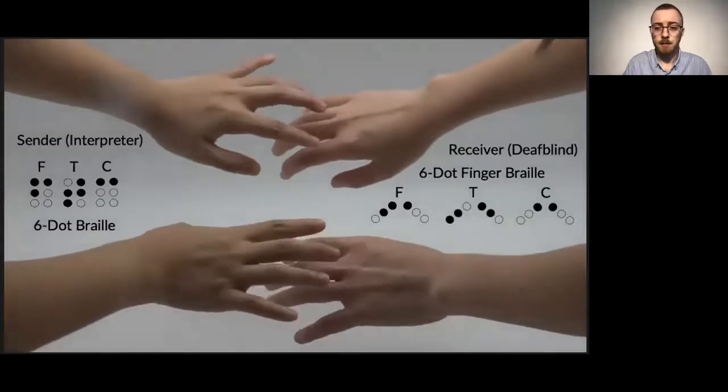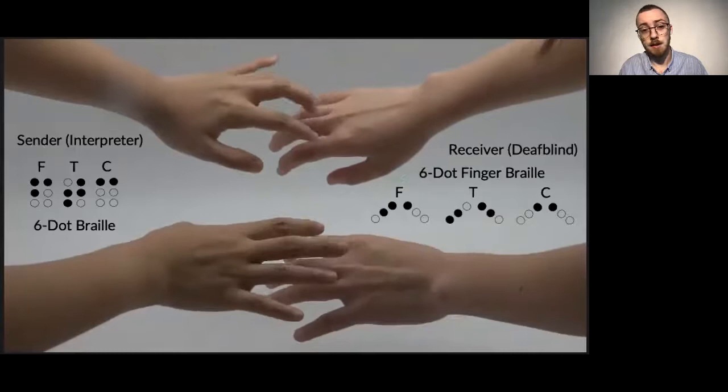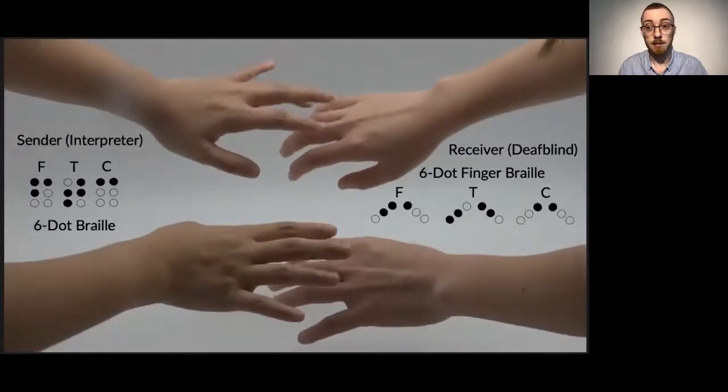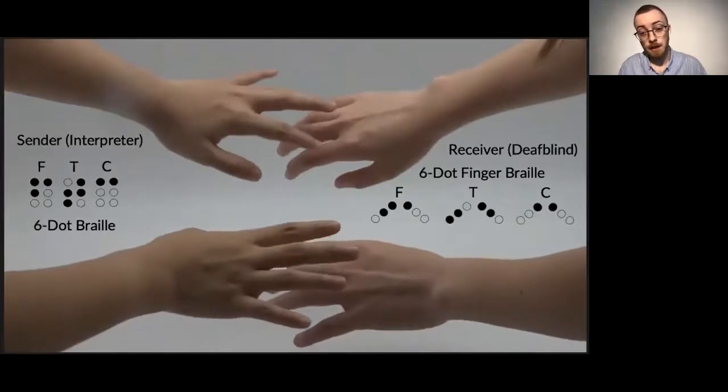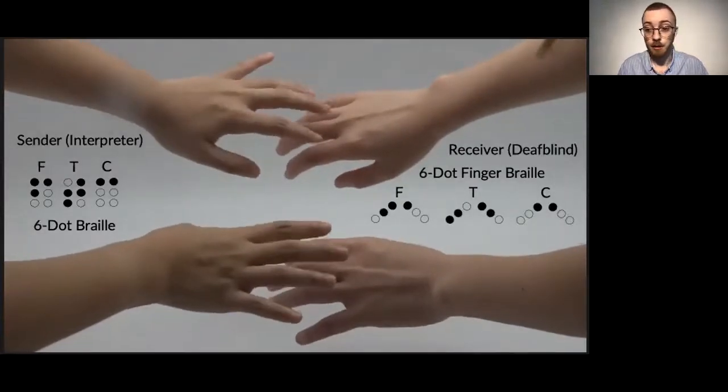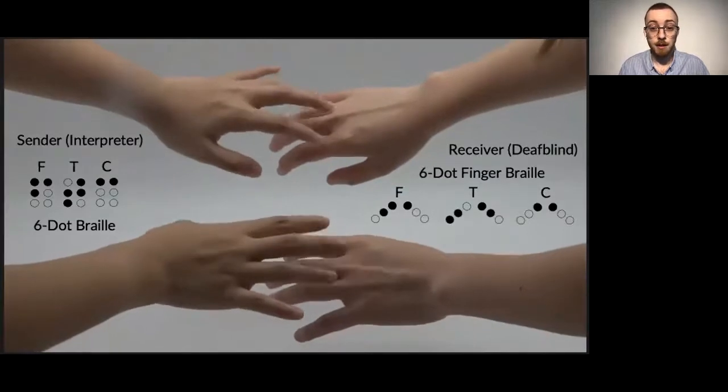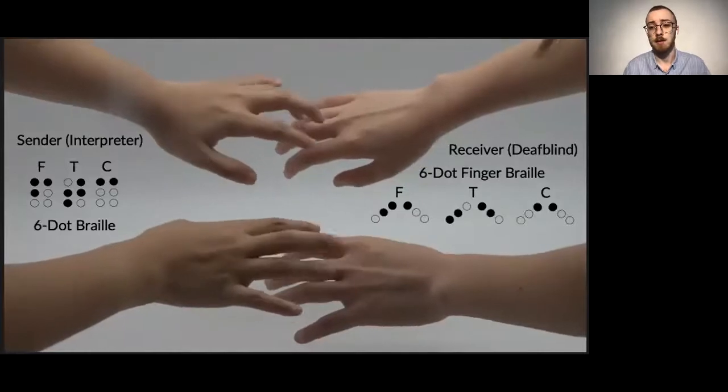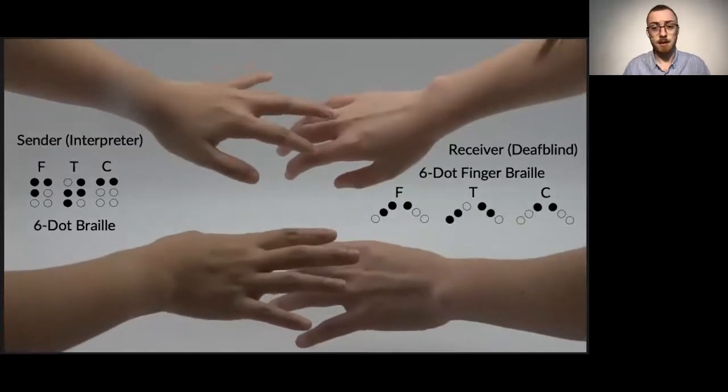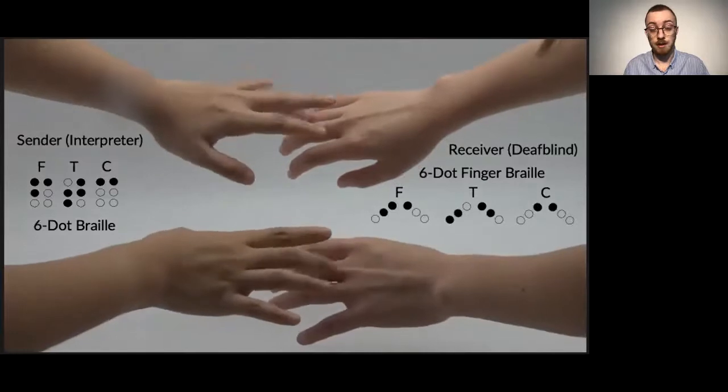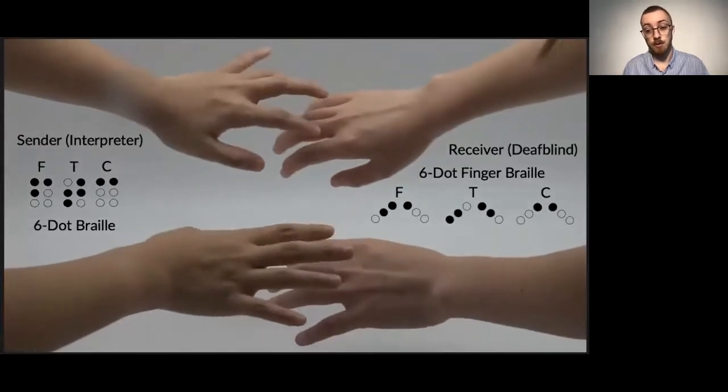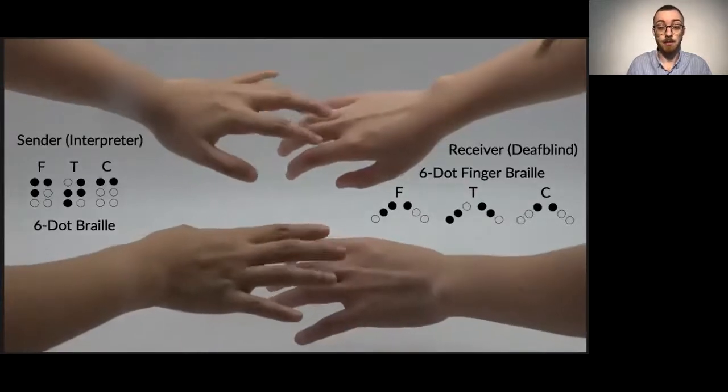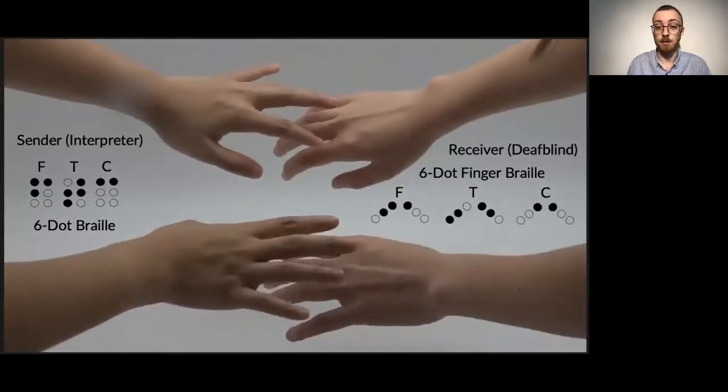Finger braille is predominantly favored for assisting deafblind communication because of both the speed and accuracy with which it can be used. However, as many people aren't familiar with finger braille, most deafblind individuals do rely quite heavily on some form of interpreter to communicate with others. This requires someone to be present who has a very good understanding of finger braille, but also it can be very time intensive for the caregivers and also very cost intensive for the deafblind individuals as well.